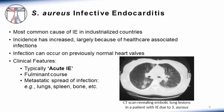Staph aureus is the most common cause of infective endocarditis in industrialized countries. Staph aureus endocarditis has increased over the past few decades, mostly because of an increase in healthcare-associated infections. Staph aureus infective endocarditis can occur on previously normal heart valves as well as damaged ones. It manifests as acute infective endocarditis and typically has a fulminant course with metastatic spread of infection to other organs. Pictured here is a CT scan showing embolic lung lesions in a patient with infective endocarditis due to staph aureus.